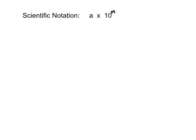So what is scientific notation? It's a number written in the form A × 10^n, where A is a number between 1 and 10. It can be equal to 1 — notice the less-than-or-equal-to sign — but it has to be strictly less than 10. It cannot equal 10.